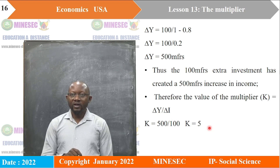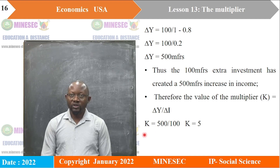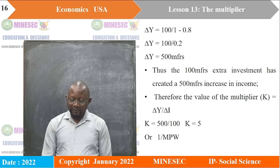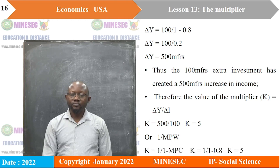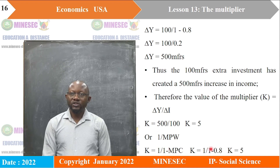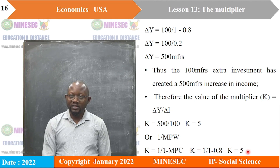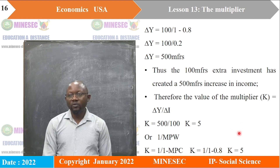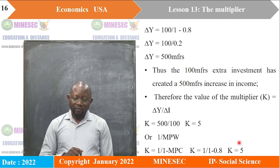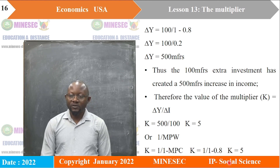Let's look at the other method: 1 over the marginal propensity to withdraw. K equals 1 over 1 minus MPC. Since 1 minus MPC equals MPS, K equals 1 over (1 minus 0.8) equals 1 divided by 0.2, which equally gives us 5 as the multiplier. That is how we get our multiplier.